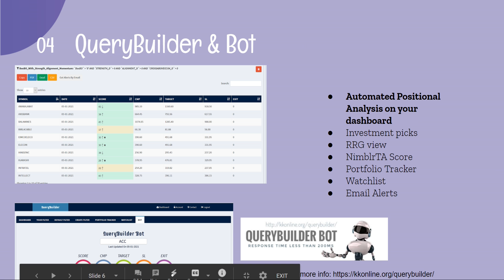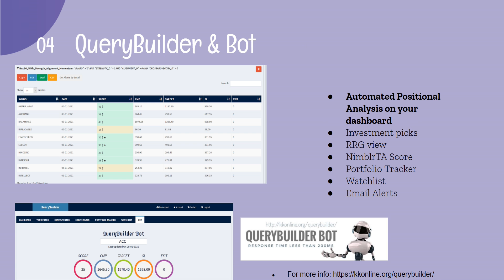The Query Builder Bot is a tool for positional analysis featuring RRG colors and Nimlity scores, along with a portfolio tracker, watch list, email alerts, and more. It is extremely popular, with less than 100 milliseconds of response time for analysis, and gives you the positional view for your investments. It is an end-of-day tool.